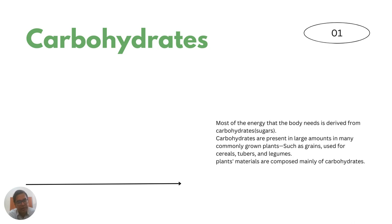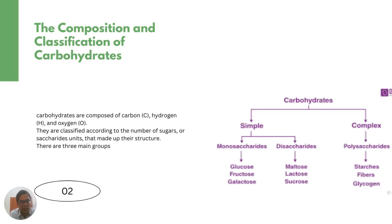Basically, carbohydrates are essentially a form of sugar. If we look at the composition of carbohydrates, they are composed of carbon, hydrogen and oxygen. They are classified according to the number of sugars or saccharide units that make up the structure.